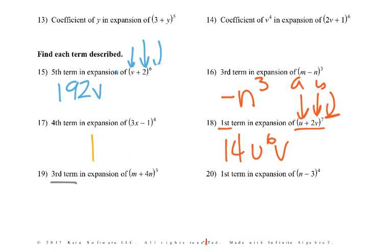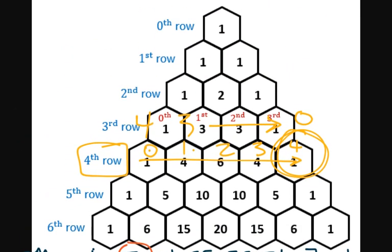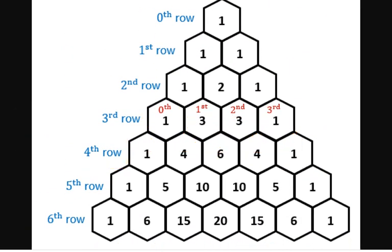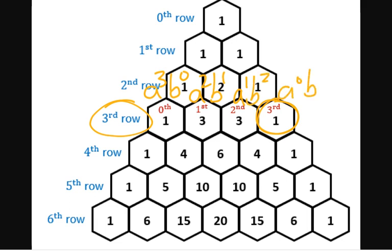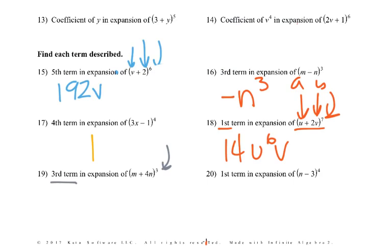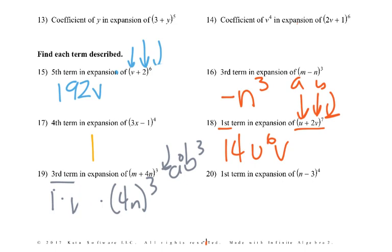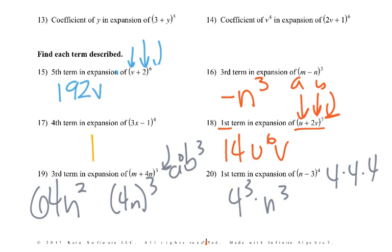Problem 19: third term on the third row of (m + 4n)^3. So that's a to the zero, b to the third — coefficient one times m^0 times 4n^3. m^0 is one, so we get 4^3 times n^3: four times four times four is sixty-four, giving us 64n^3.